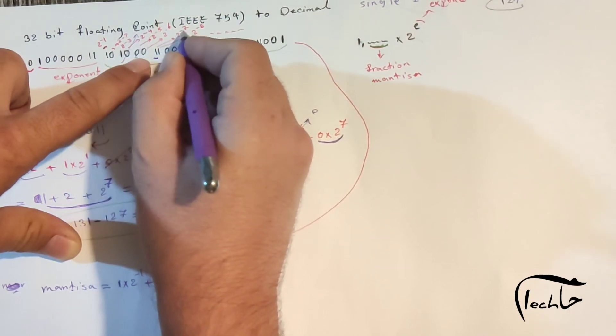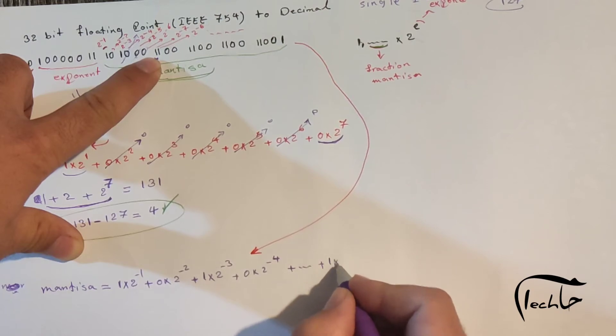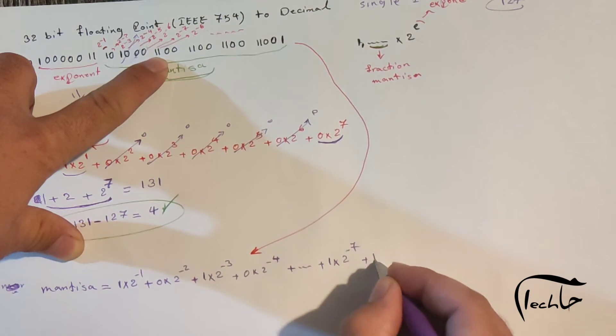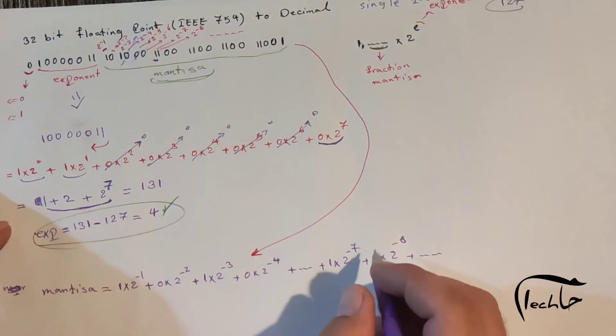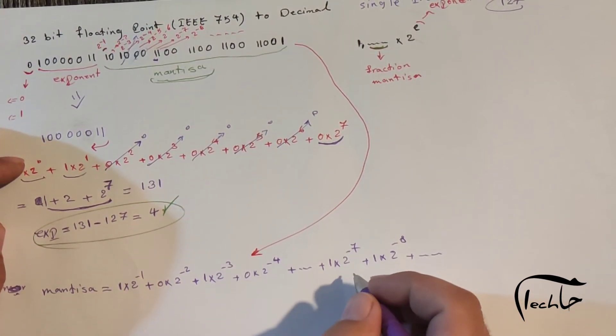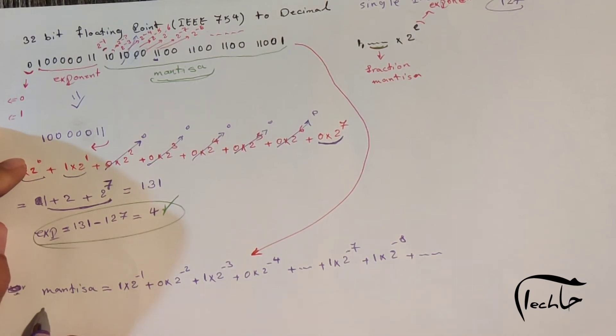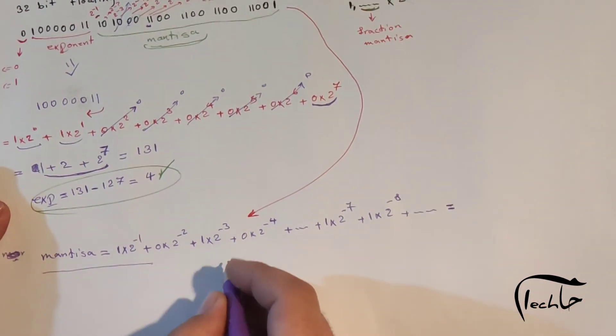This equals 1 times 2 to negative 7 plus 1 times 2 to negative 8. Now we can put this into the calculator to find out the actual value. I stopped the video and calculated this. It will be 0.6375.